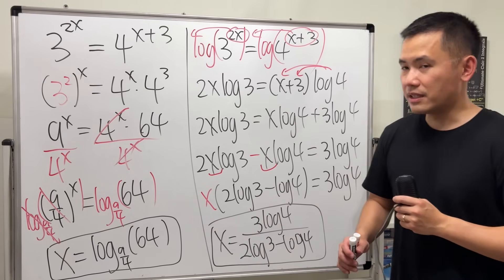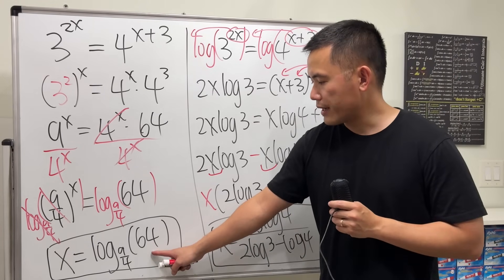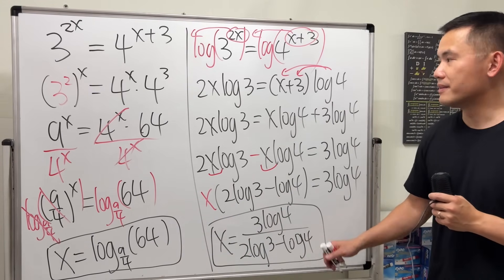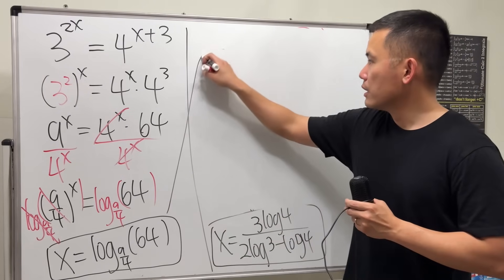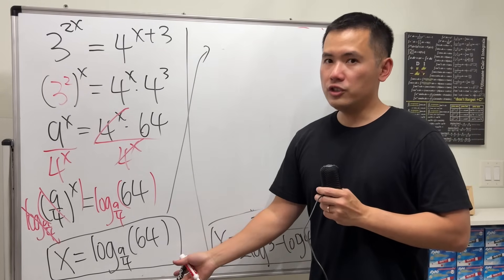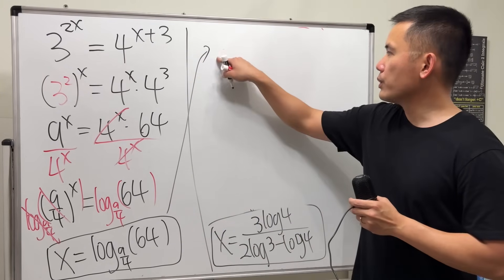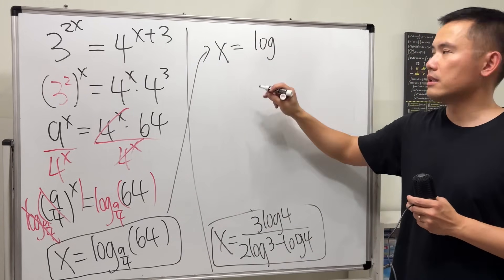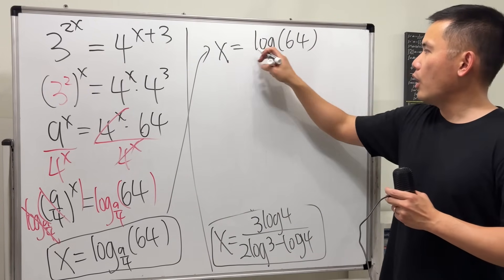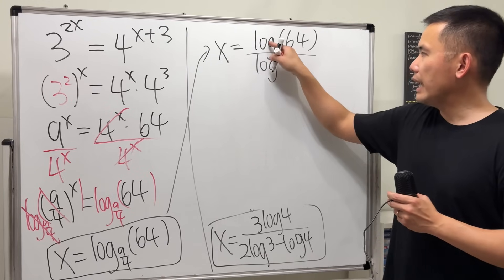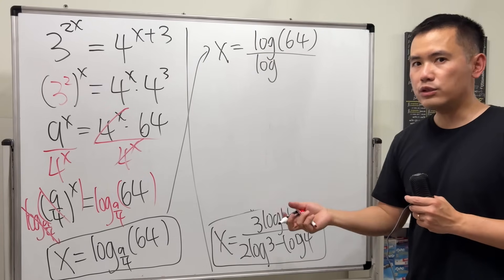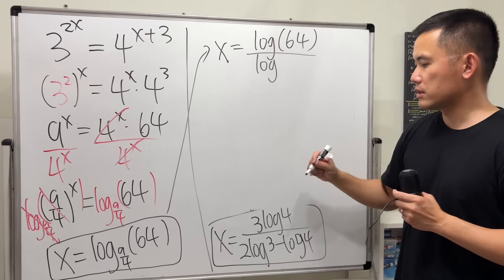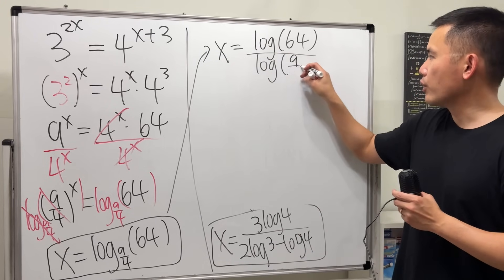And if you would like to have something for fun, I will show you how to write this into that right here. So firstly, we use the change of base formula. This is equal to log of 64, and this is just log base 10 over log—they have to be the same base. If you want to use natural log, just make sure they are both natural logs. And then the bottom is 9/4.